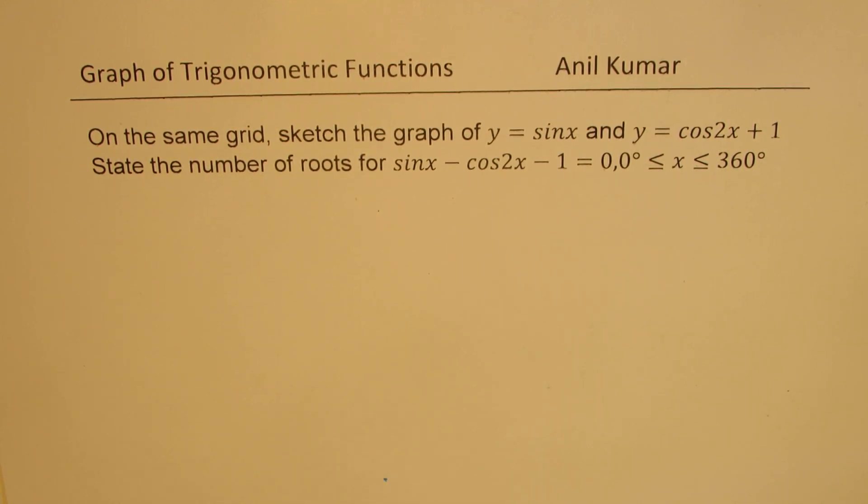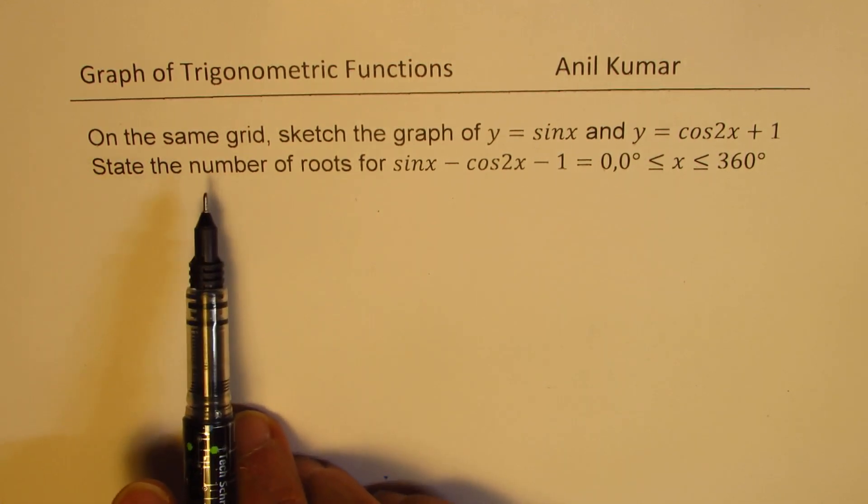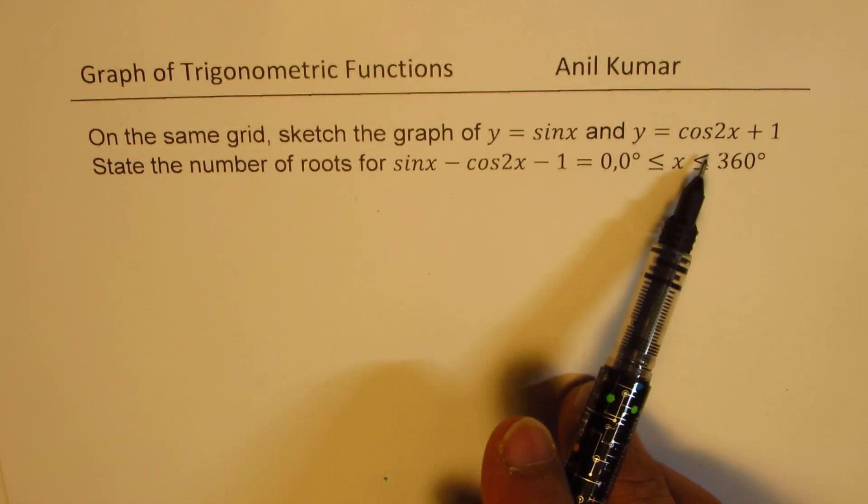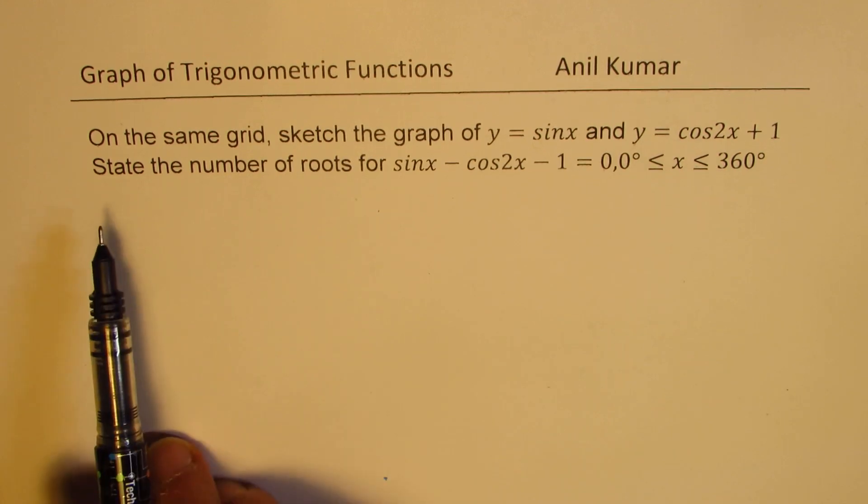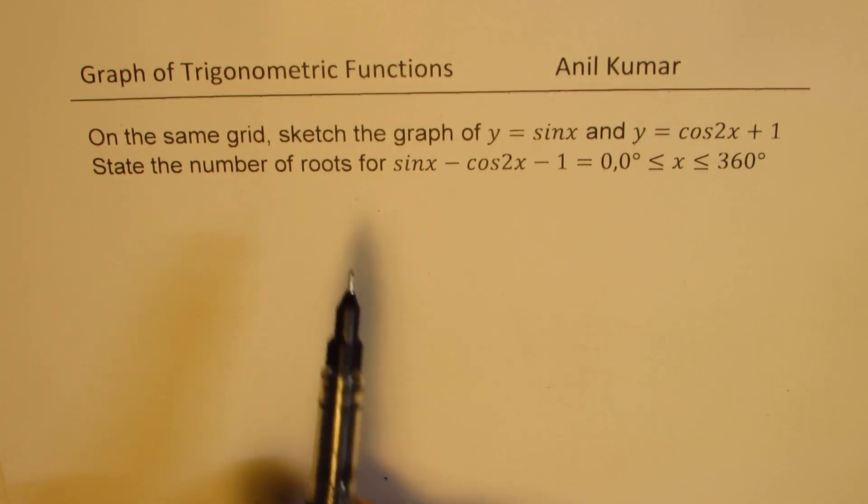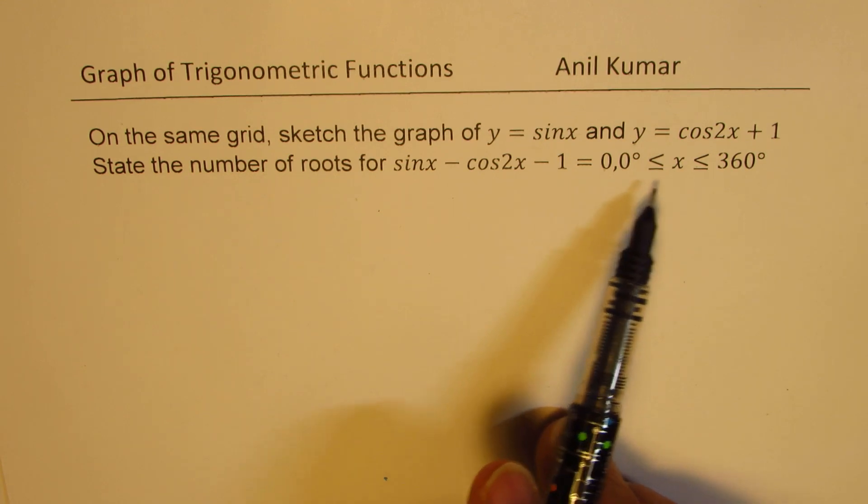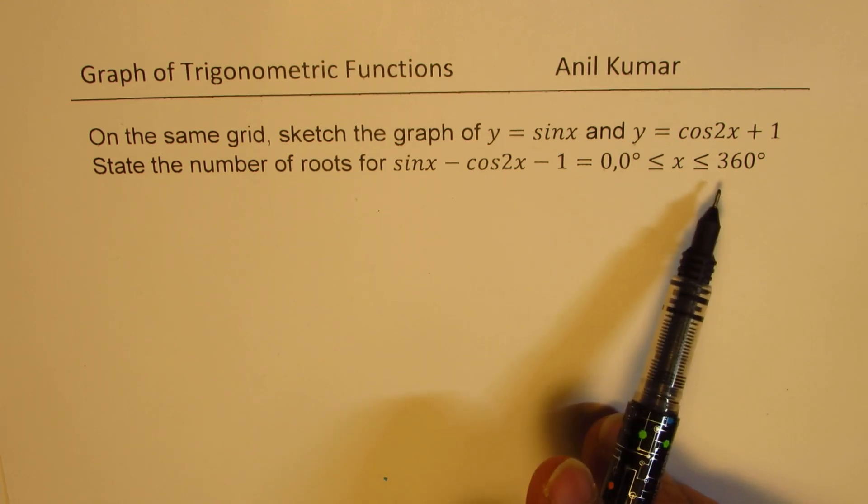The question here is, on the same grid, sketch the graph of y equals sin x and y equals cos 2x plus 1. State the number of roots for sin x minus cos 2x minus 1 equals 0 when x is between 0 to 360 degrees.